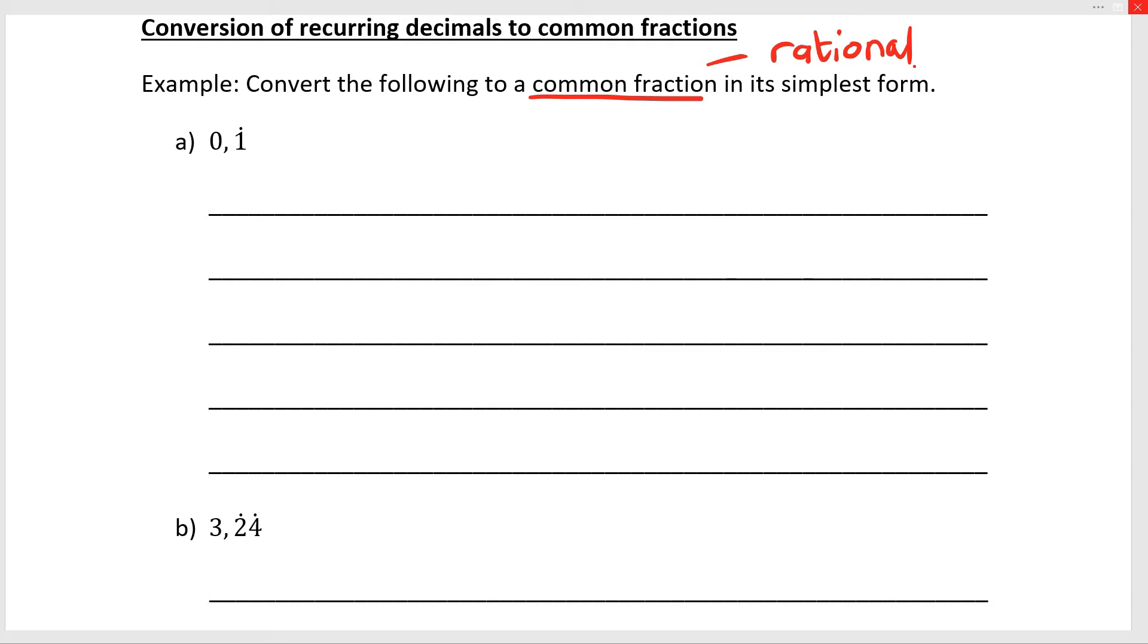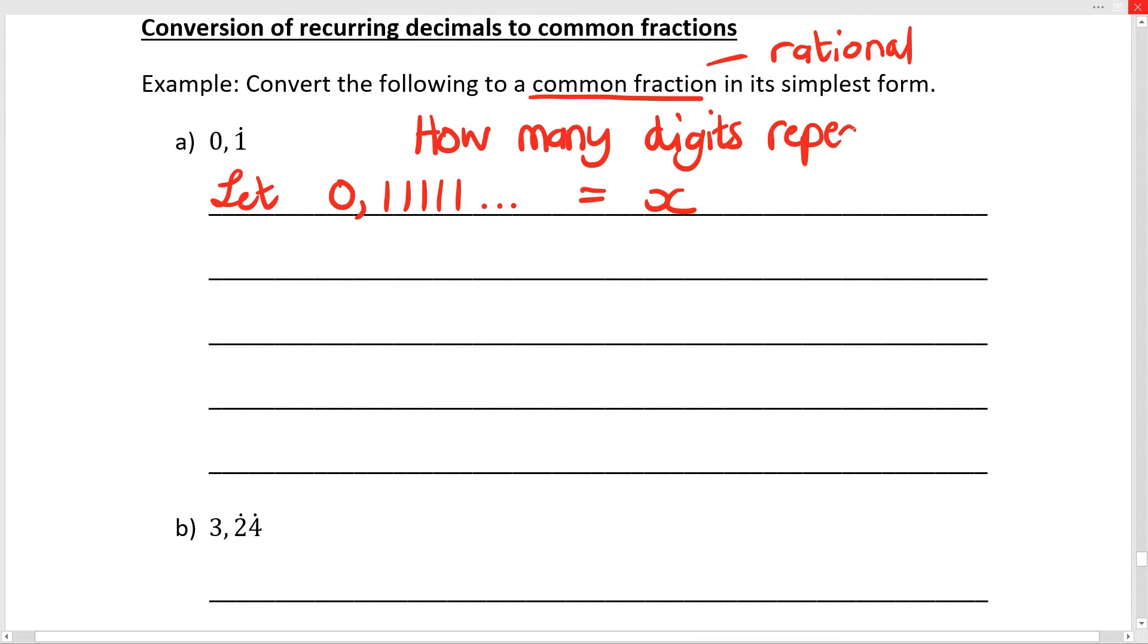Let's say let 0.11111 and so on equal x. My question now is how many digits repeat? And the answer is 1. One digit, just the 1 repeats. By 1 I mean the 1 that repeats, but also the fact that it's only 1 digit. So 1 digit repeats, I'm going to multiply this number by 10 and there is 1 zero in 10.